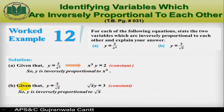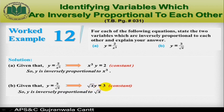Similarly, in part (b), given that y = 3/√x, by cross-multiplying we can write it as √x · y = 3, where 3 is also a constant. We see the product of √x and y is constant, so we can say y is inversely proportional to √x, or simply y is inversely proportional to the square root of x.